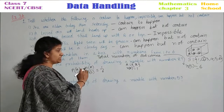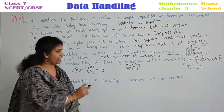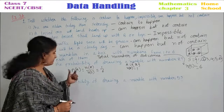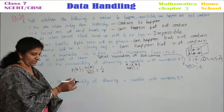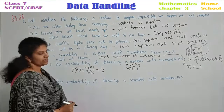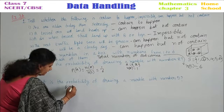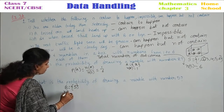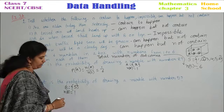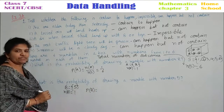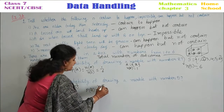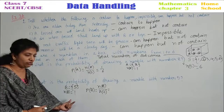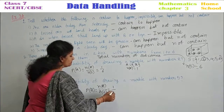For all sub-questions, the sample space is the same — only your A or B value changes according to the event. For the second sub-question, let B be the event of drawing marble number five. How many marbles with number five are in the box? Only one. Number of marbles with number five N of B equals one. Probability P of B equals N of B by N of S equals one by six.